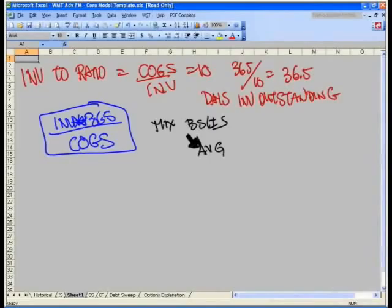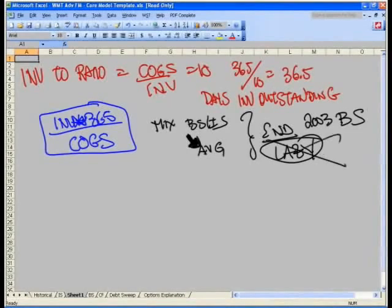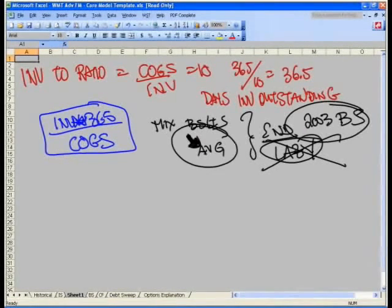However, for purposes of this training module, we would just simply use the ending balance for two reasons. Number one, so that we don't have to input the 2003 balance sheet, that would be just another pain, and also because we're flat out lazy. That's okay, we'll be lazy, but just please note to yourself, when you're building this model for real, you do not want to be lazy. You do want to input the third year of balance sheet historically, and you want to use your average balance sheet number.